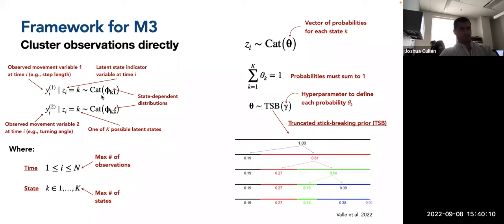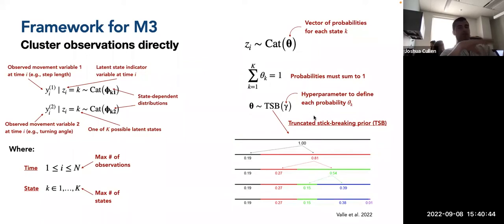A categorical distribution is just a single instance of a multinomial distribution, the same way that a Bernoulli distribution is a single instance of a binomial. Time is indexed by i, states are indexed by k from one to K. We assume these latent states come from a categorical distribution with probabilities of being in each state that sum to one. These probabilities are assumed to come from a non-parametric Bayesian prior called a truncated stick-breaking prior.